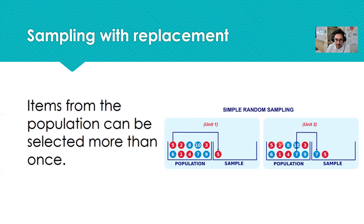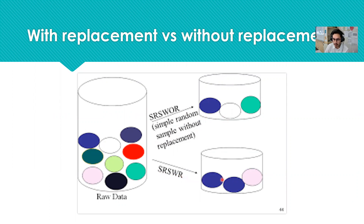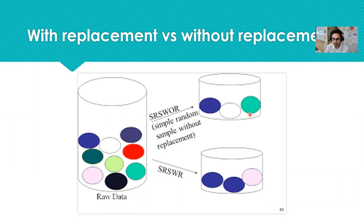Sampling with replacement means that items can be selected more than once. Item five was the first item selected from the population, and you can see that it's available to be selected again. Item seven was selected, but it was possible that item five could have been selected twice. If you don't replace, your sample will consist of only unique items. But if you do replace, your sample could contain repeats — here, the purple item was selected twice from the population.